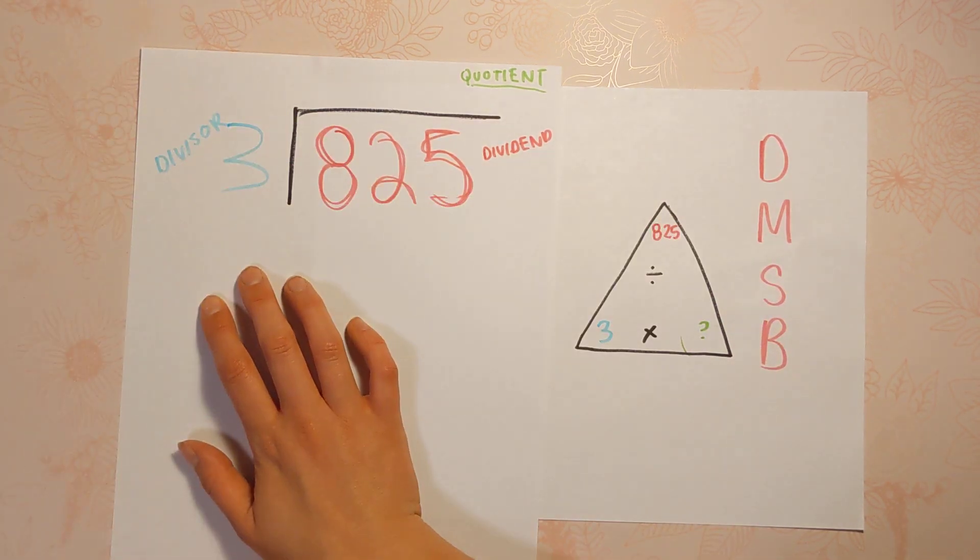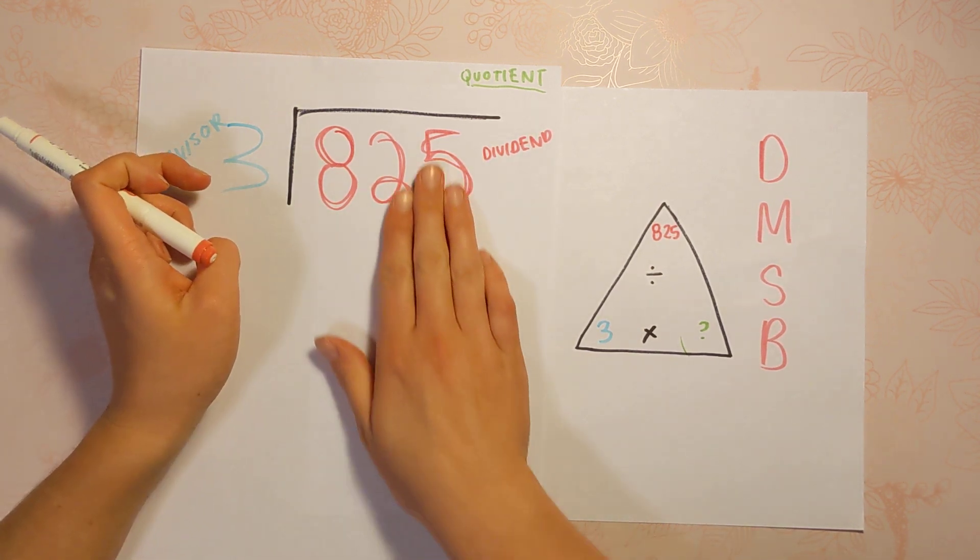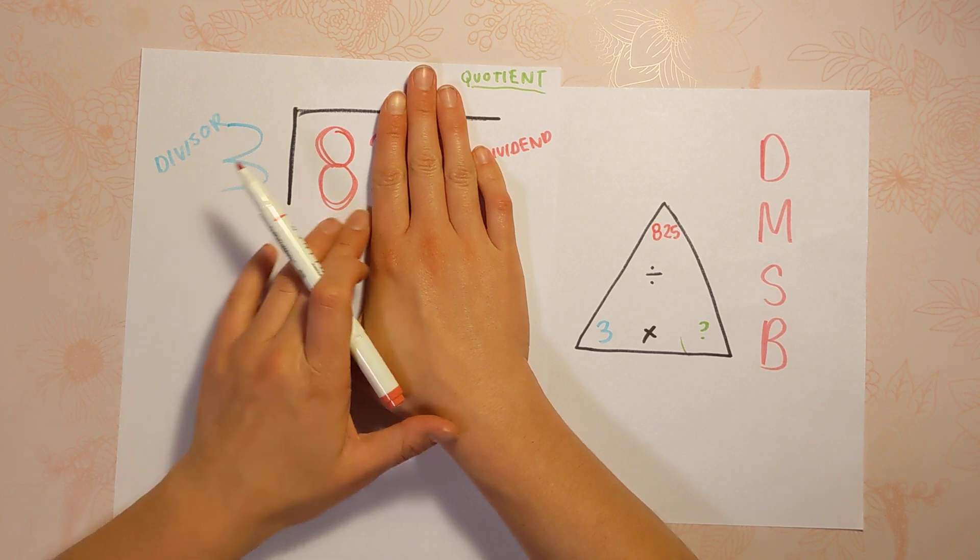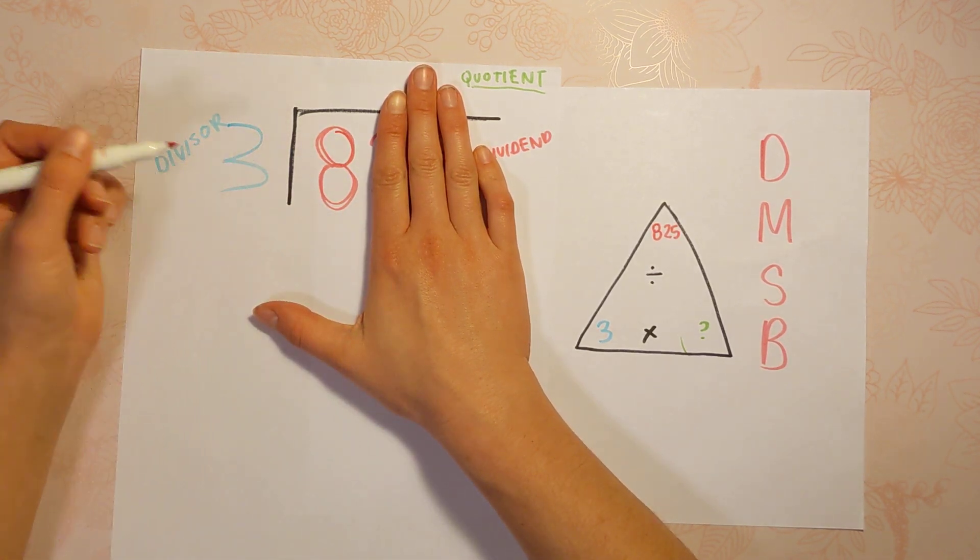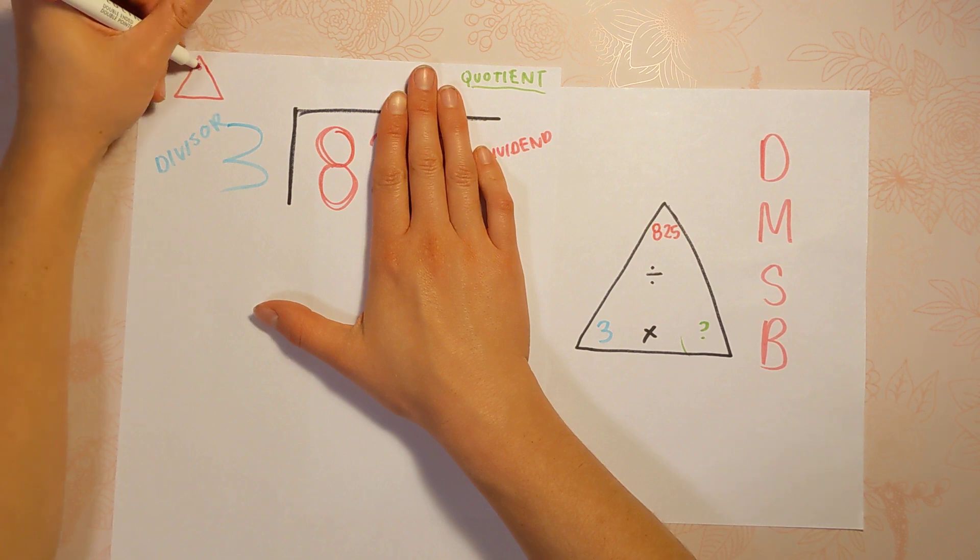So let's get started. The first step is to divide, but you're not doing the whole number at once. That would be really challenging. You're going to do one digit at a time. You're just going to do this. We're going to do 8 divided by 3. So if I drew a little fact triangle, it would look like this, 8 divided by 3.